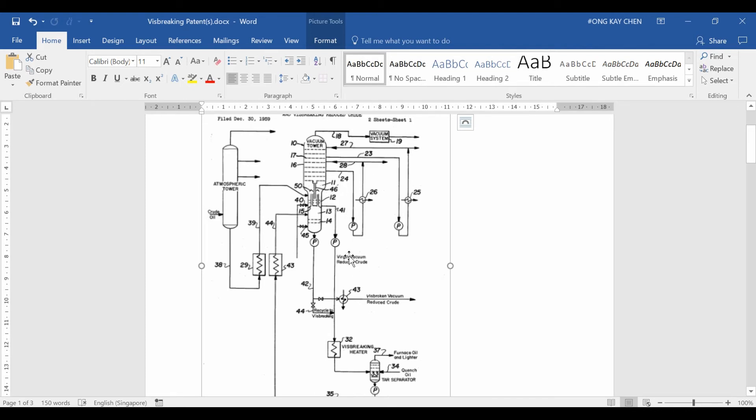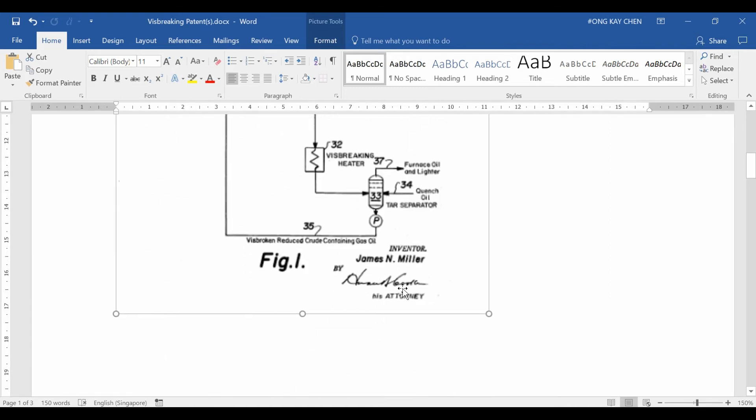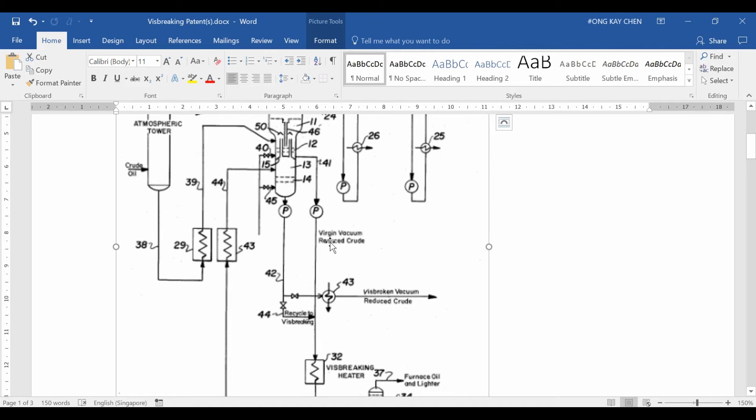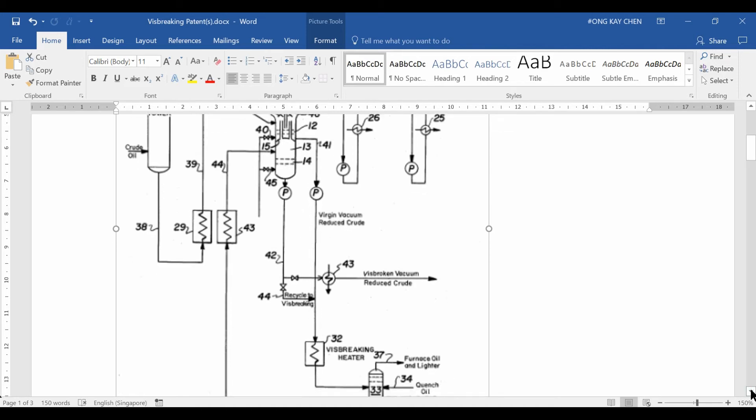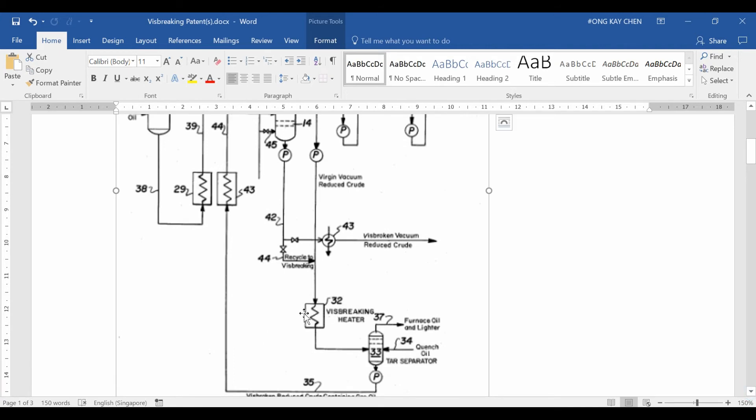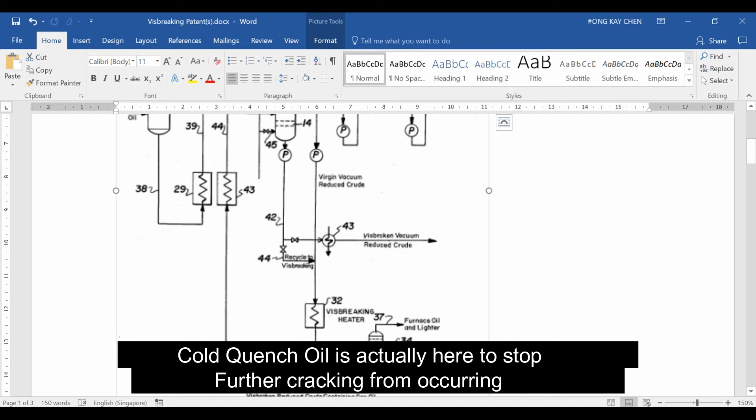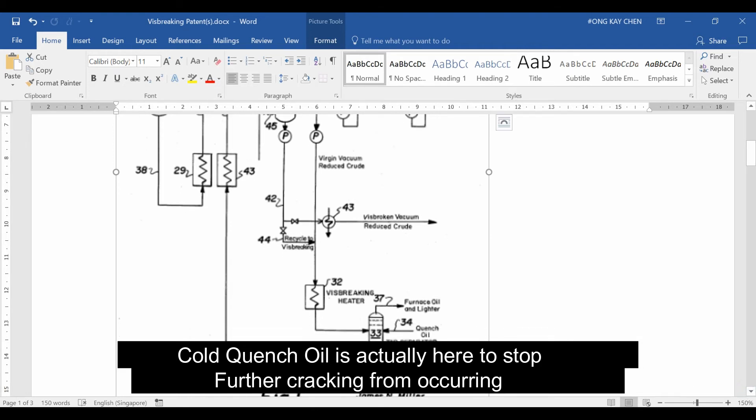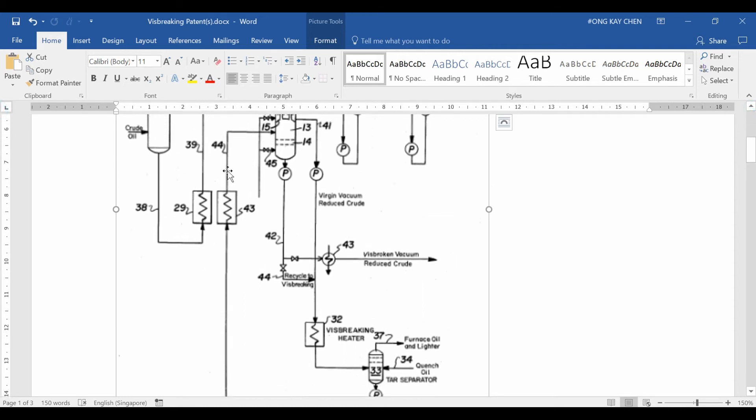We originally have our crude oil from the atmospheric tower. These are the various fractions talked about earlier. This is the atmospheric reduced crude, AKA long residue, and it goes into the vacuum tower. In this we have all the reflux systems and everything. Over here you can see the various reflux systems for the vacuum gas oils and everything. At the bottom we have the short residue, they call it vacuum reduced crude. And what did they do with that? They sent it into the visbreaking heater. You can see number 32, visbreaking heater. They'll separate it out into the furnace oil and lighter fractions, and there'll be some quench oil.